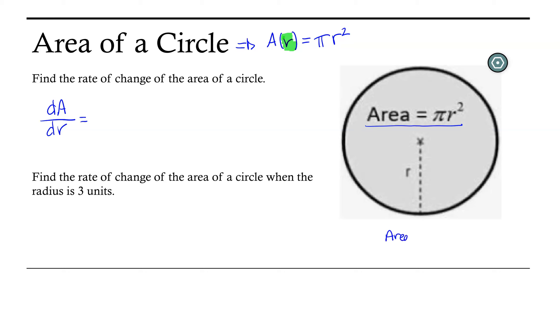So area is typically measured in square units. Could be square feet, could be square miles, could be square inches. And radius of this circle that's measured in square units would just be measured in units.